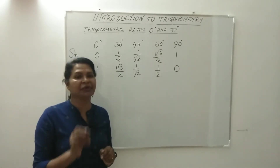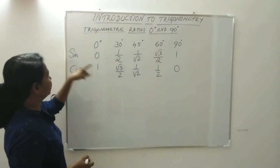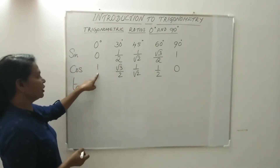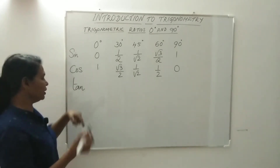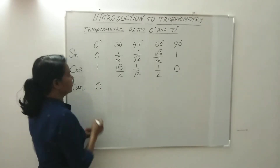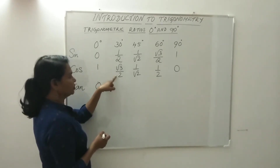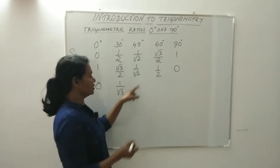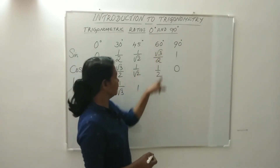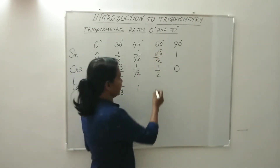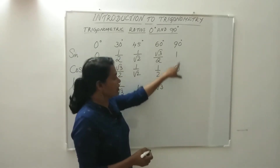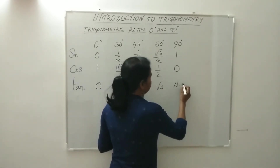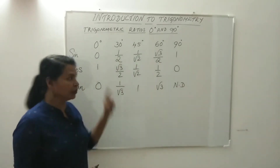Sin divided by cos gives the tan value. So tan 0: 0 divided by 1 is 0. Tan 30: 1 by 2 divided by root 3 by 2 — the 2s cancel — we get 1 by root 3. Tan 45: same number divided gives 1. Tan 60: root 3 by 2 divided by 1 by 2 — we get root 3. And 1 divided by 0 — division by 0 — is not defined.